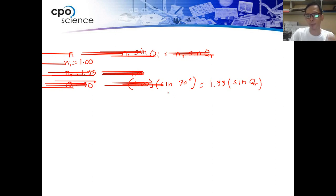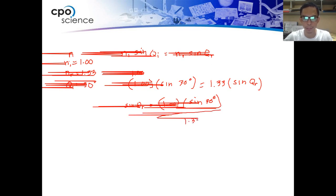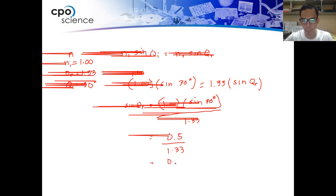Sine of 30 is 0.5, so we have 0.5 over 1.33, which equals 0.376.